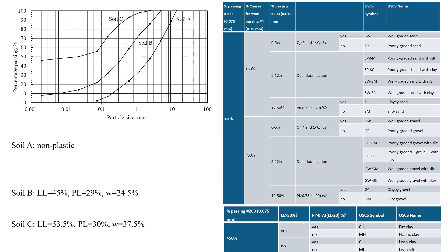Good day everybody. In this video I will explain how we classify soil based on the Unified Soil Classification System. There are three soils we're going to work with: Soil A, which is non-plastic material, and Soils B and C, which are plastic. To classify the soil we're going to use the charts, starting from the left and working through to the right.